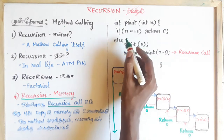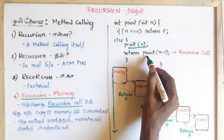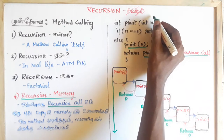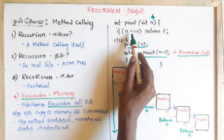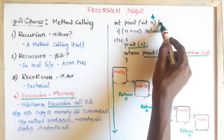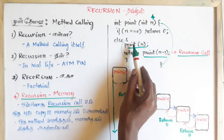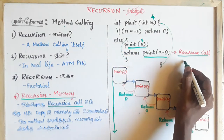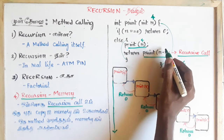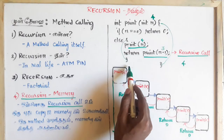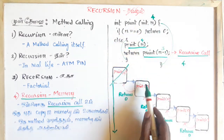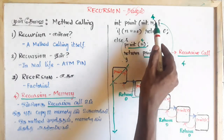If it is not 0, I will print it and call the recursive call method. I will put the number 4. The number 4 is not 0, so the return is 0. The first method prints 4, then calls print of n-1, which is print of 3. Then print of 4 will be erased from memory. The new method becomes print of 3.